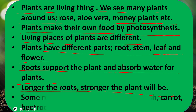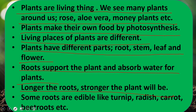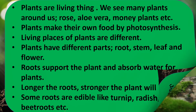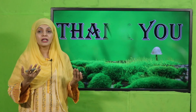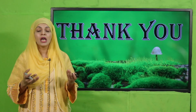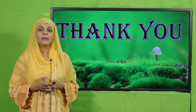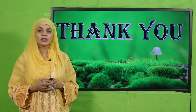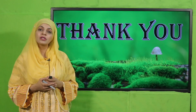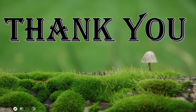Plants have different parts — root, stem, leaf, and flower. Roots support the plant and absorb water. The longer the roots, the stronger the plant will be. Some roots are edible like turnip, radish, and carrot. Today we have learned a lot about plants and about roots. I hope you have enjoyed today's lecture. Keep everybody around you safe — have a good day, thank you so much.